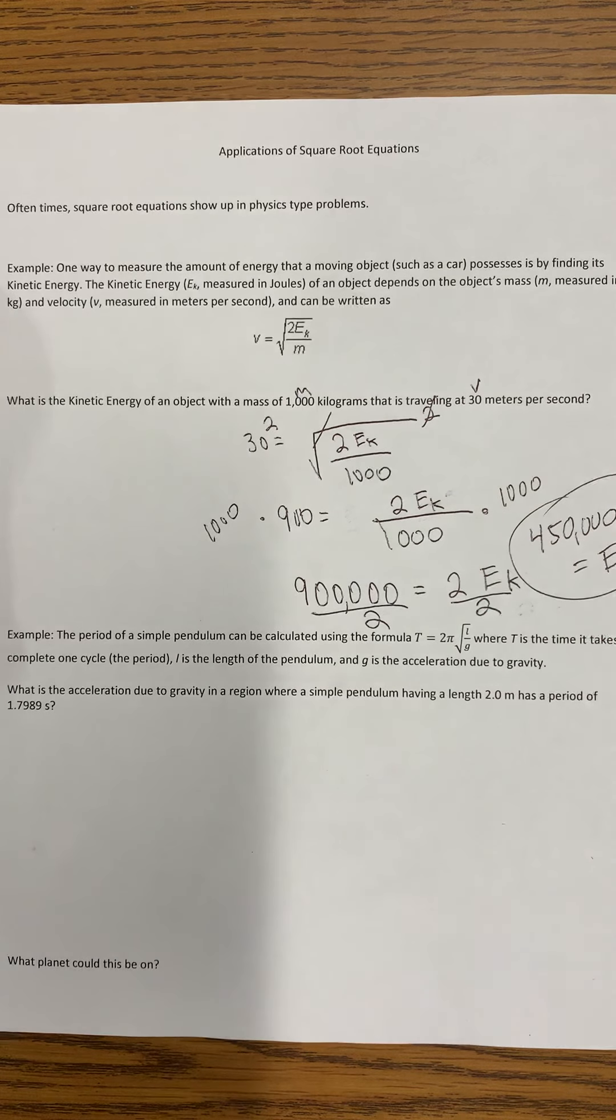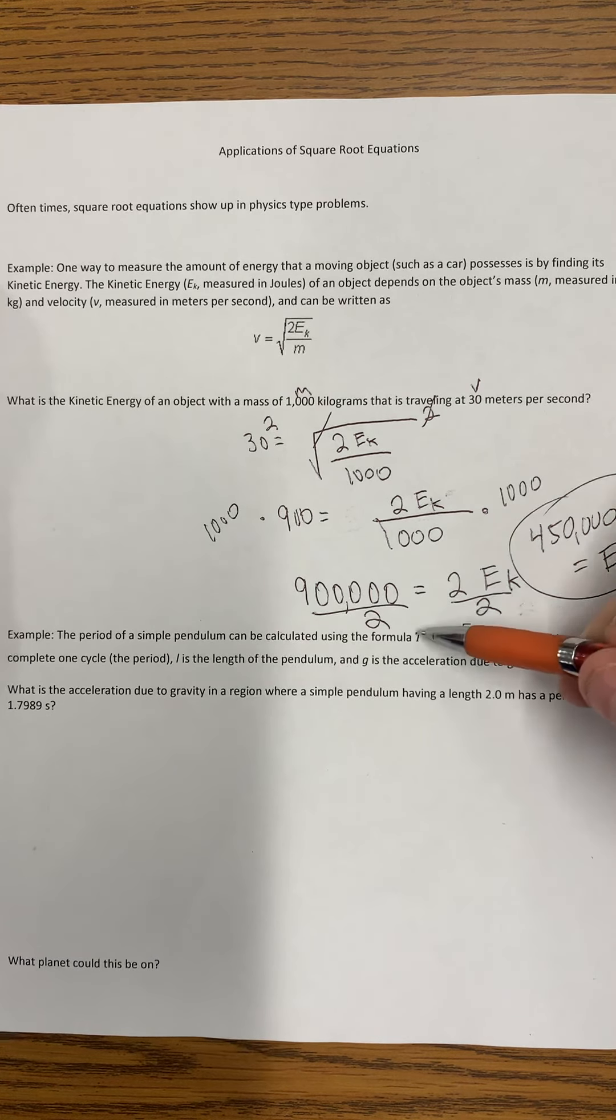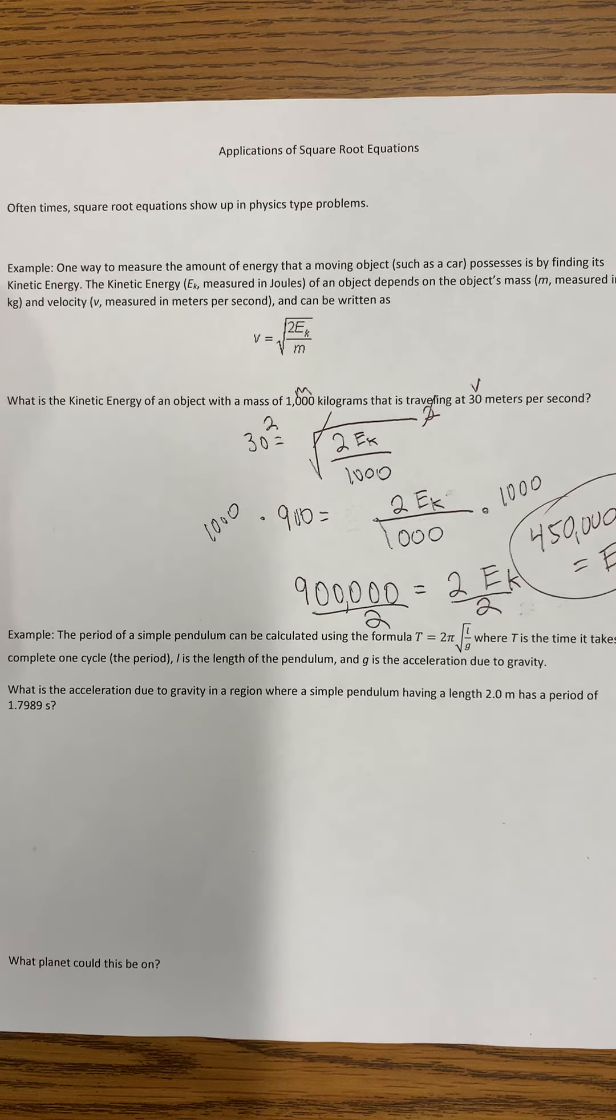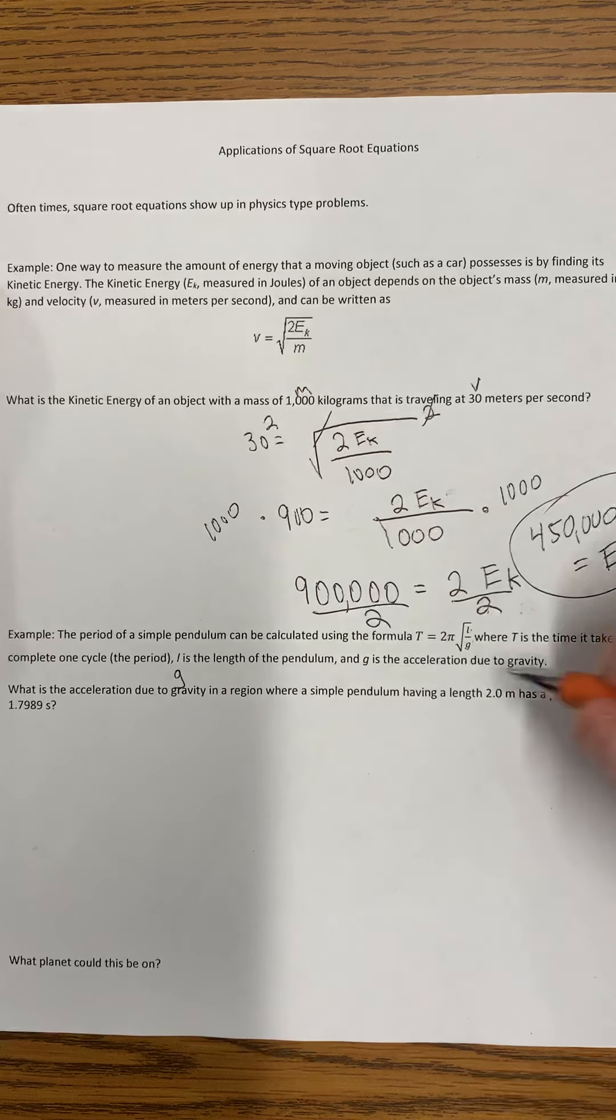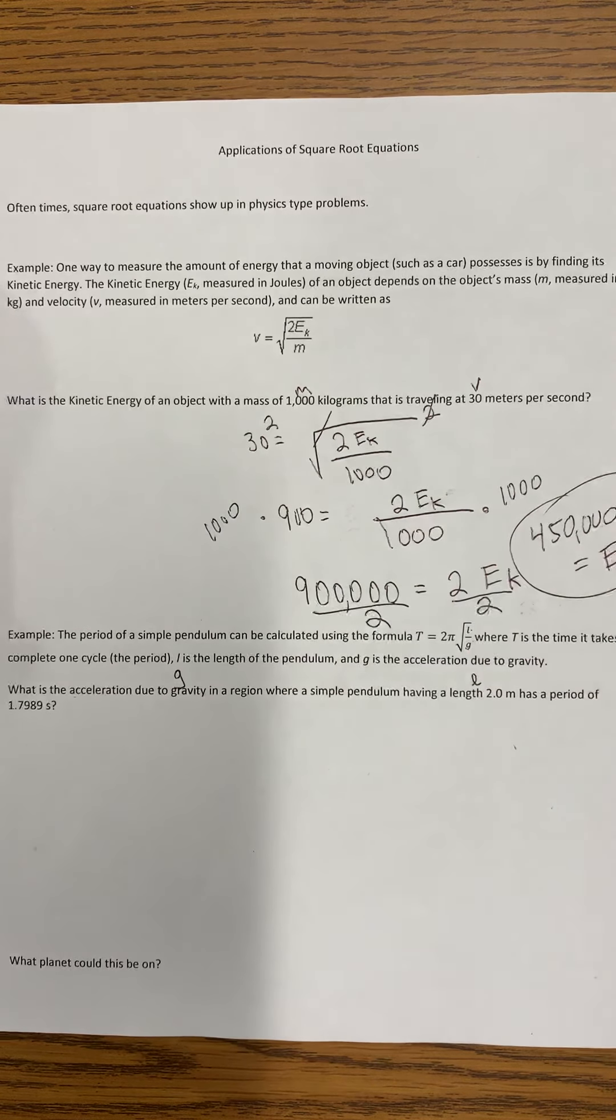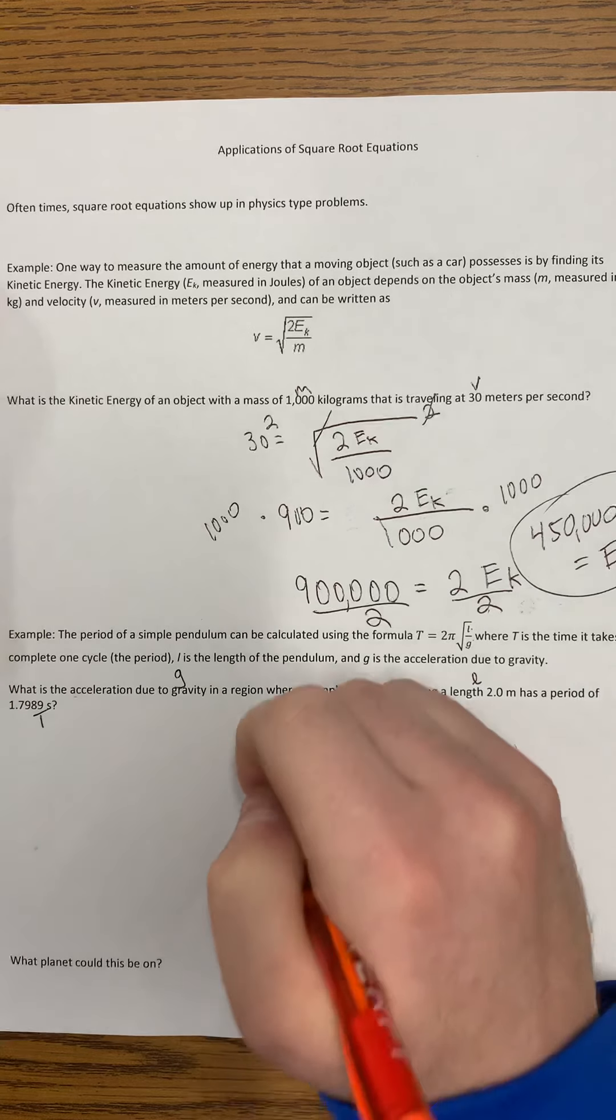Another example: the period of a simple pendulum can be calculated using the formula T equals 2 pi times the square root of the length of the pendulum divided by the gravitational pull, or the acceleration due to gravity. We're trying to solve for G in the equation, where a simple pendulum having a length of 2 meters has a period of 1.7989 seconds.